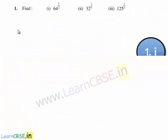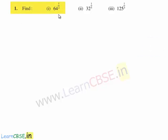Let us move on to the sixth exercise. The first question is: find 64 raised to the power of 1 by 2, 32 raised to the power of 1 by 5, and 125 raised to the power of 1 by 3.